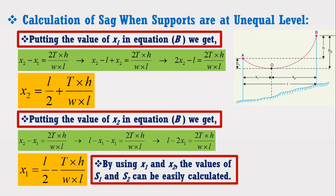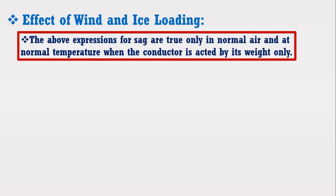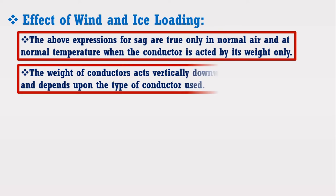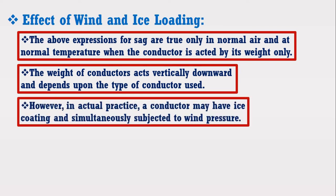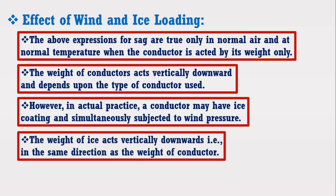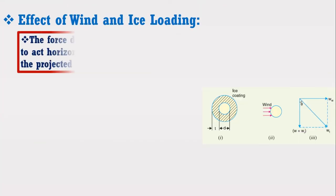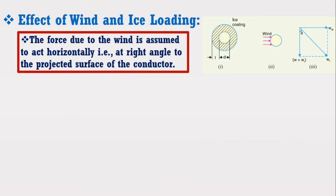Now I am going to discuss the effect of ice and wind on the sag. The above expressions for sag are true only under normal air and temperature when the conductor is acted upon by its weight only. The weight of the conductor acts vertically downward. However, in actual practice, a conductor may have ice coating and simultaneously be subjected to wind pressure. The weight of ice acts vertically downward in the same direction as the conductor weight. The force due to wind pressure is assumed to act horizontally at right angles to the projected surface of the conductor, as shown in the figure.